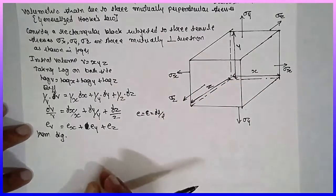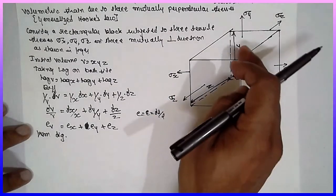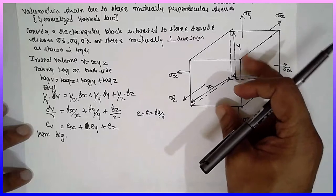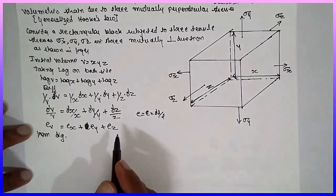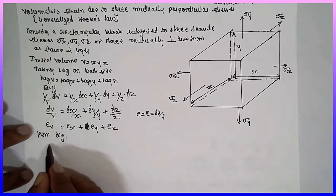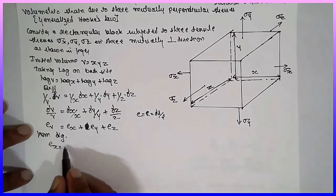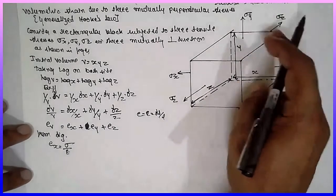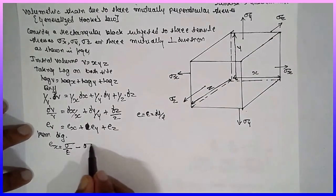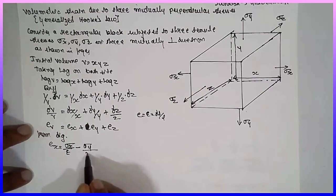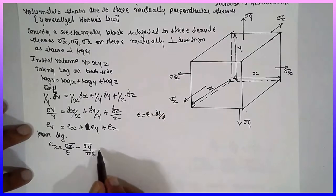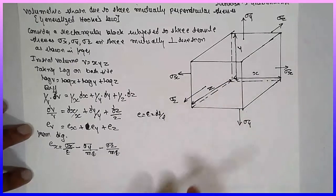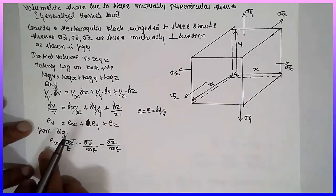If tension is applied in the x-direction, the length increases in x, but reduction occurs in y and z due to the Poisson's ratio effect. Therefore, strain in the x-direction: eX equals sigma x divided by E, minus sigma y divided by ME, minus sigma z divided by ME. Here, 1/M is the Poisson's ratio.